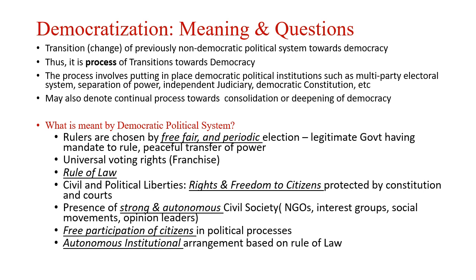Civil and political liberties होनी चाहिए — the rights and freedoms of citizens should be protected by constitution and independent courts। Presence of a strong and autonomous civil society होना चाहिए — civil society का मायने है जो government और market दोनों से अलग होती है, जैसे NGOs, interest and pressure groups, social movements, opinion leaders। Free participation of citizens in political process होना चाहिए। और सबसे important है कि autonomous institutional arrangement होना चाहिए जो rule of law पर based हो — इसीलिए कहते हैं कि democracy में institution matters।